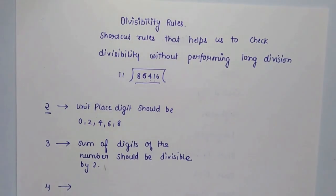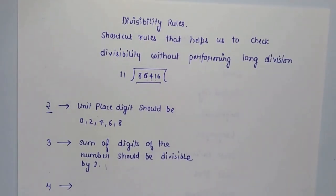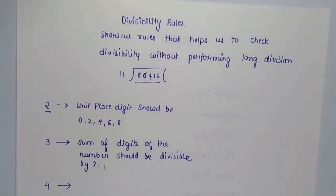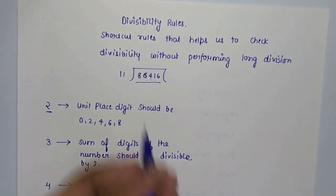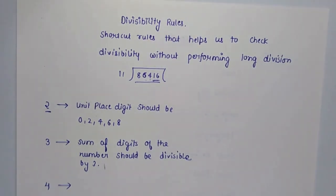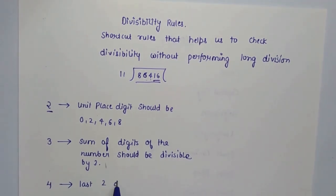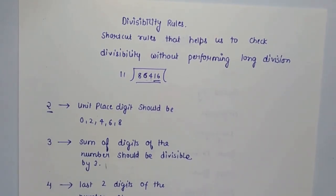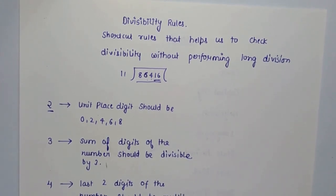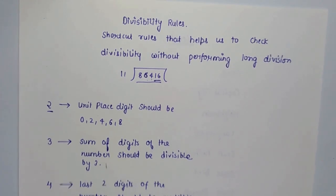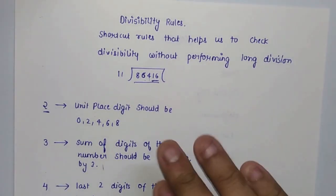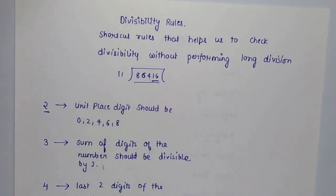For 4, the divisibility rule is: take the last two digits of the number. If the last two digits form a multiple of 4, then the number is divisible by 4. For example, with 86,416, the last two digits are 16, which is a multiple of 4. Also, if the last two digits are 00, the number is divisible by 4 as well.